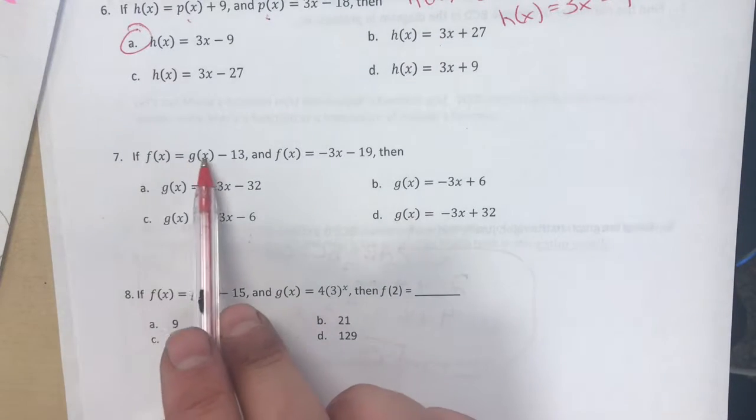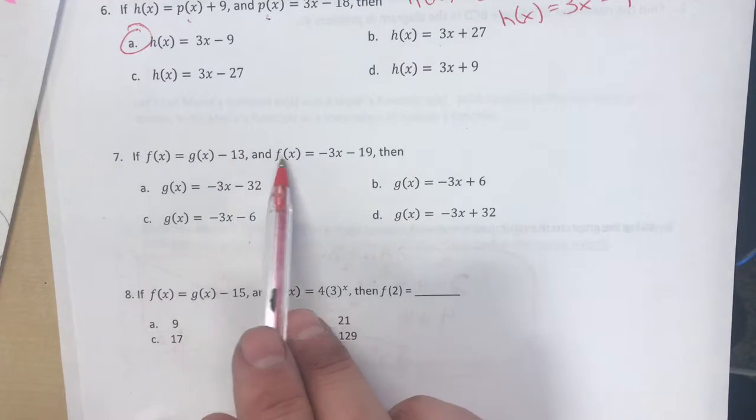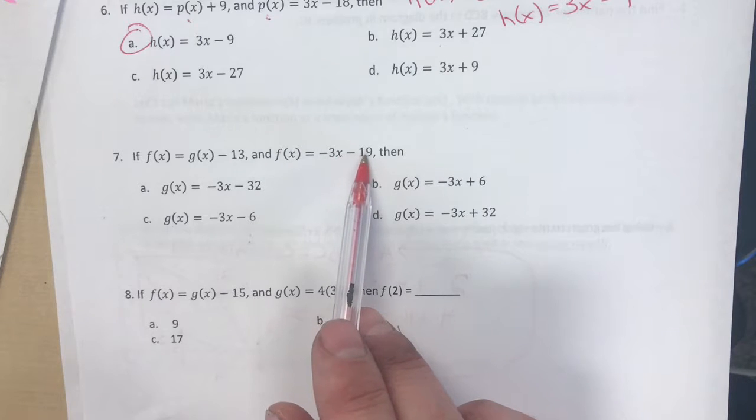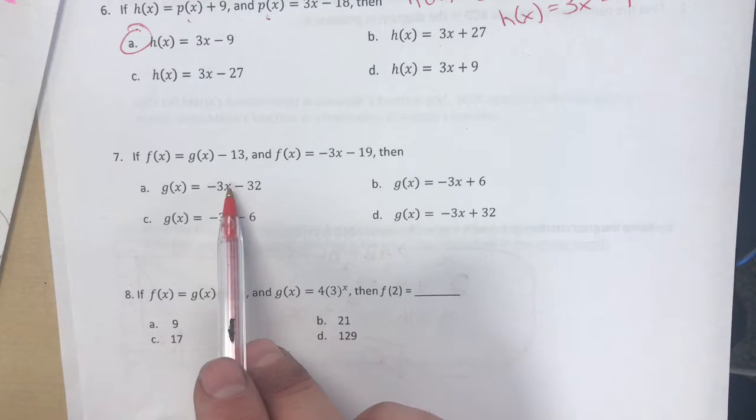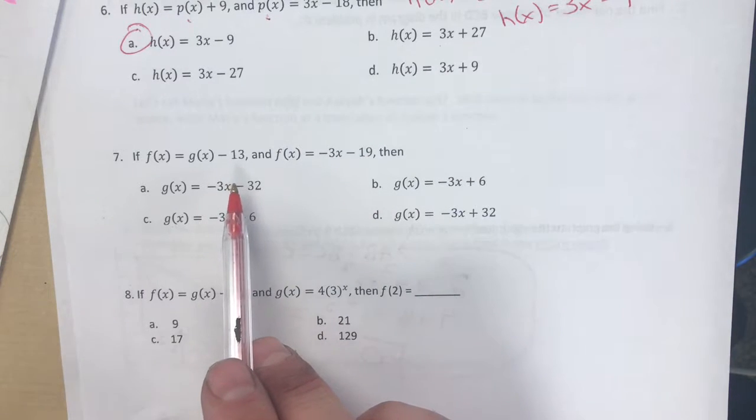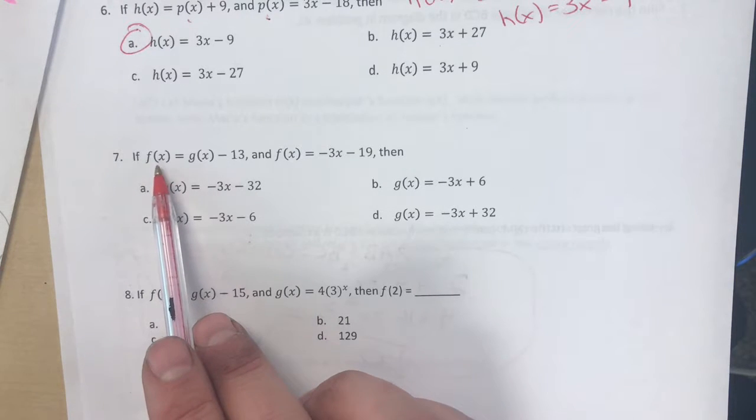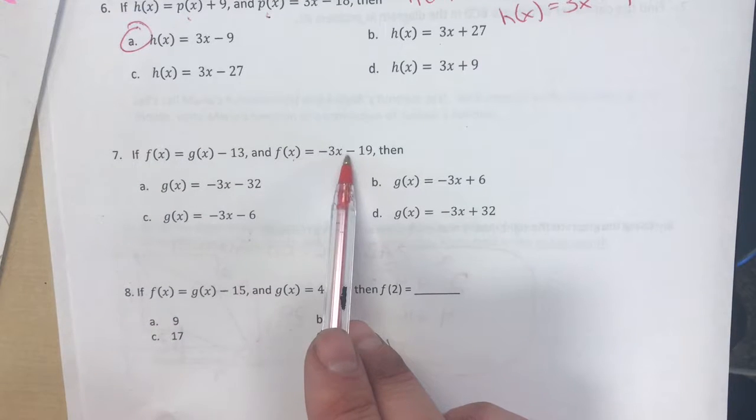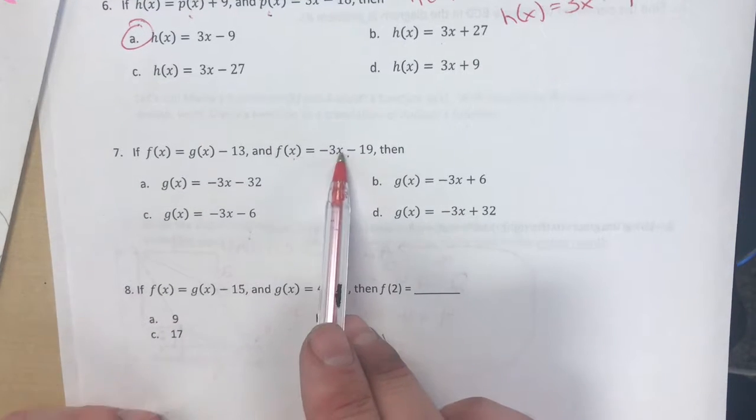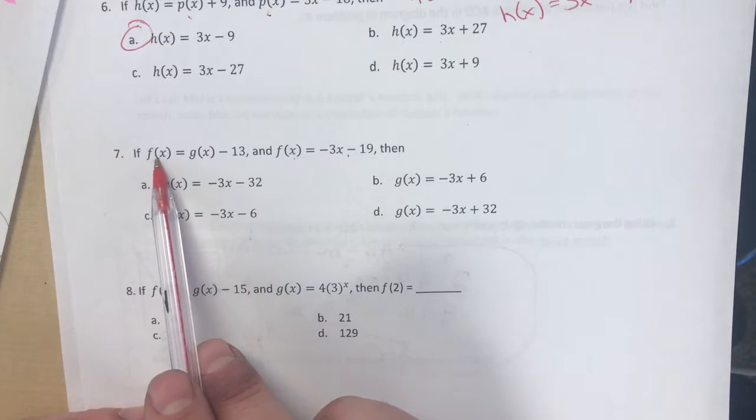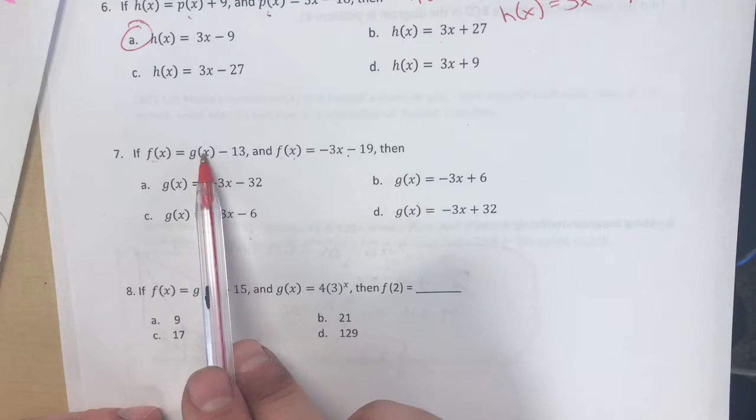Number 7. If f(x) equals g(x) minus 13 and f(x) is negative 3x minus 19, then g(x) is what? Ooh. Okay. So basically with this one, f(x) is this. So I would need to take what f(x) is and put it here for f(x) and then solve for g(x).